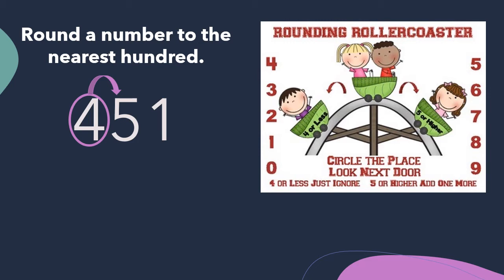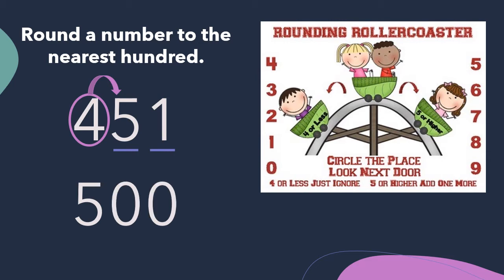So the boss digit tells the four that it has to add one more. One more than four is five. So in our rounded number, the four becomes a five. Now anything to the right of the digit that we're rounding — like the five and the one — well they become zeros. So 451 rounded to the nearest hundred is 500. That means that 451 is closer to 500 than it is to 400.